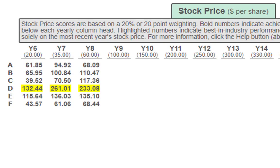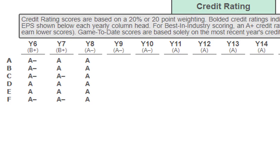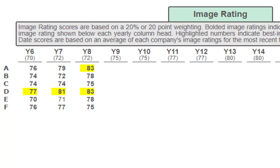Next we have stock price — everyone met expectations, and company D is best in industry at 233. Great job everyone. For credit rating, everyone has an A, so keep it up. Some are improving, some are holding. You really want an A-minus, A, or A-plus. All teams are doing great. For image rating, everyone met expectations — fantastic. We actually have a tie for best in industry with company A and company D, the first time we've had a tie. Company A went up four points, D went up a couple, B went up five, C went up one, E went up seven, and F dropped two but is still meeting expectations.